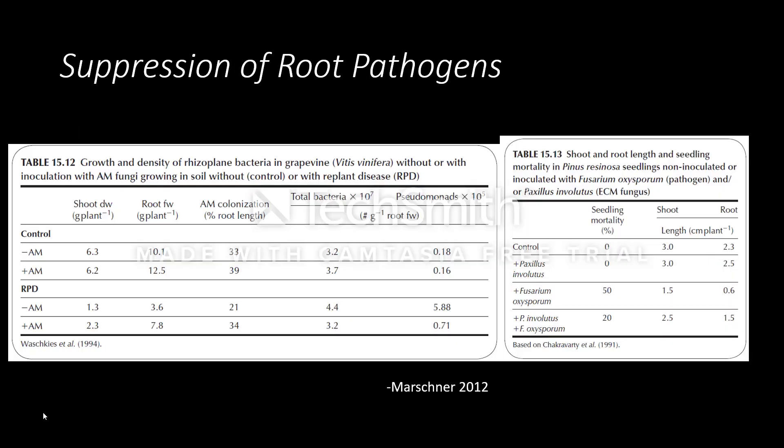Mycorrhizal fungi also have a role in suppression of plant pathogens. The table shows the effect of AM fungi on replant disease in grapes caused by Pseudomonas. Population of Pseudomonas is high in diseased plants without AM fungi, but when AM fungi is present, the population of Pseudomonas in diseased plants is low. Another table shows seedling mortality when Pinus resinosa seedlings are inoculated with Fusarium oxysporum and an ECM fungi — inoculation with ECM fungi decreases seedling mortality.